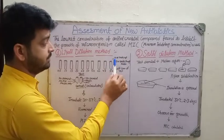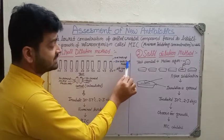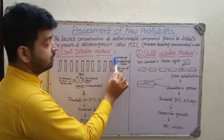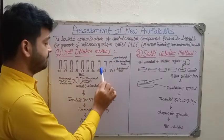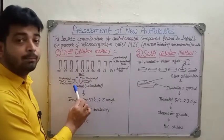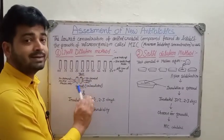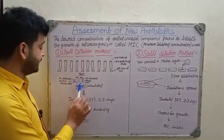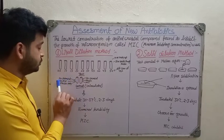Then 5 ml of double strength media is added to each tube, and the remaining volume is made up with water to a total of 10 ml. A control group is also included to allow comparison, because the control helps us assess how much turbidity occurs.